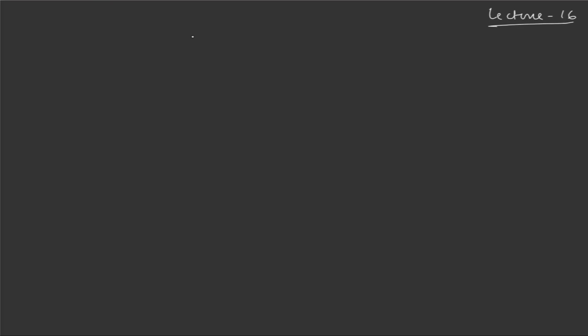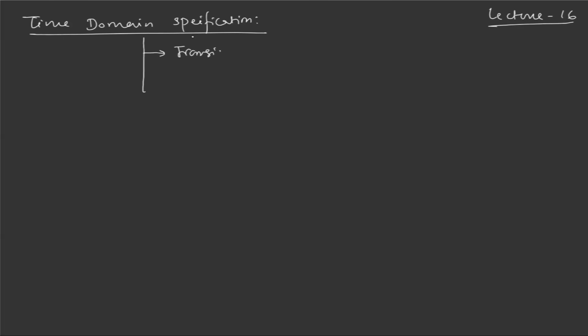Hello everyone, this is lecture number 16. As mentioned in the last lecture, in this lecture we will be talking about the time domain specification of a system. Under time domain specification, there are two components we need to study: one is the transient specifications, and the second is the steady-state specifications.